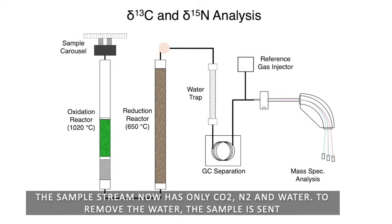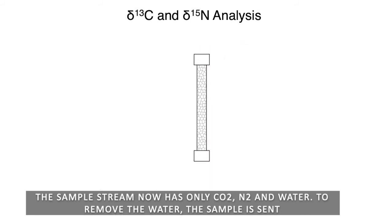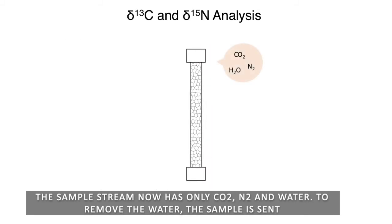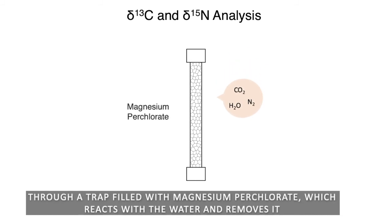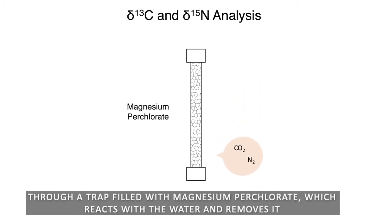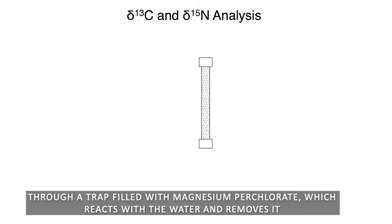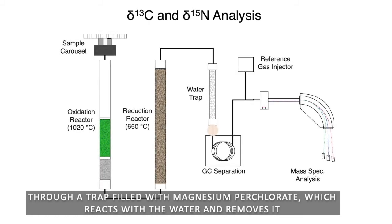The sample stream now has only carbon dioxide, dinitrogen, and water. To remove the water, the sample is sent through a trap filled with magnesium perchlorate, which reacts with the water and removes it.